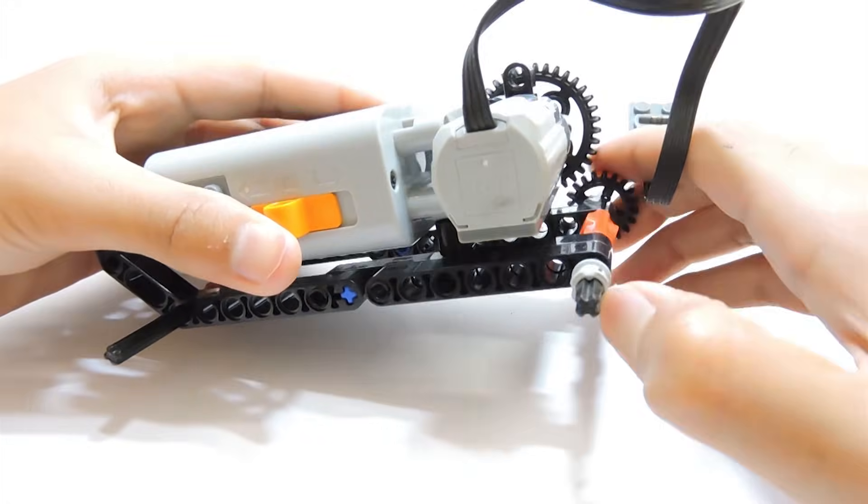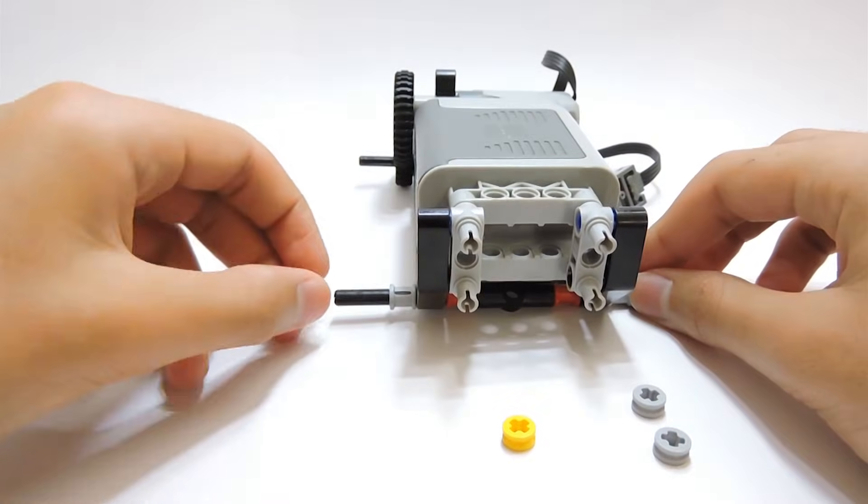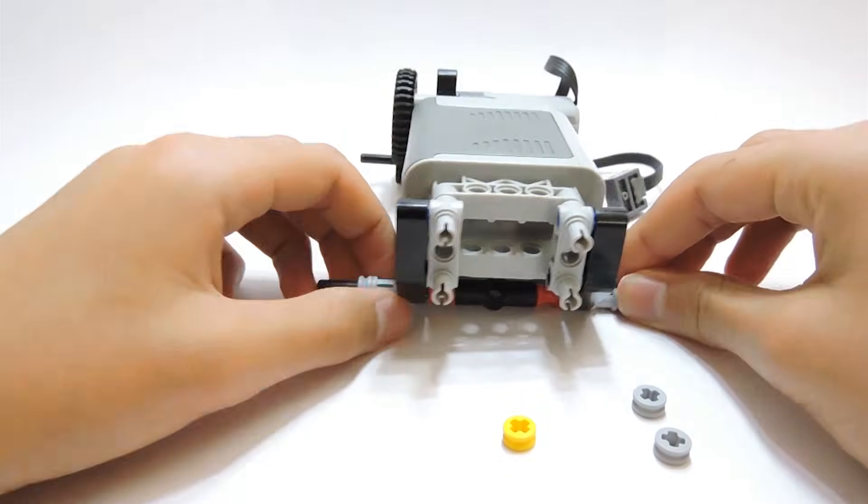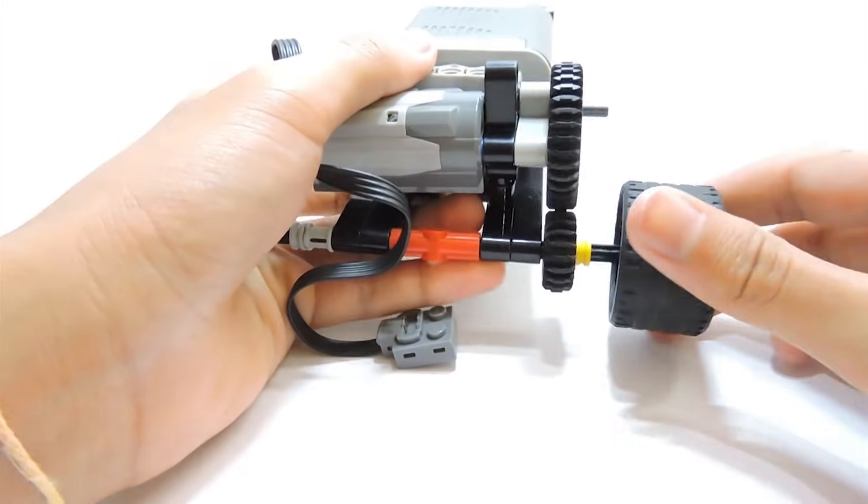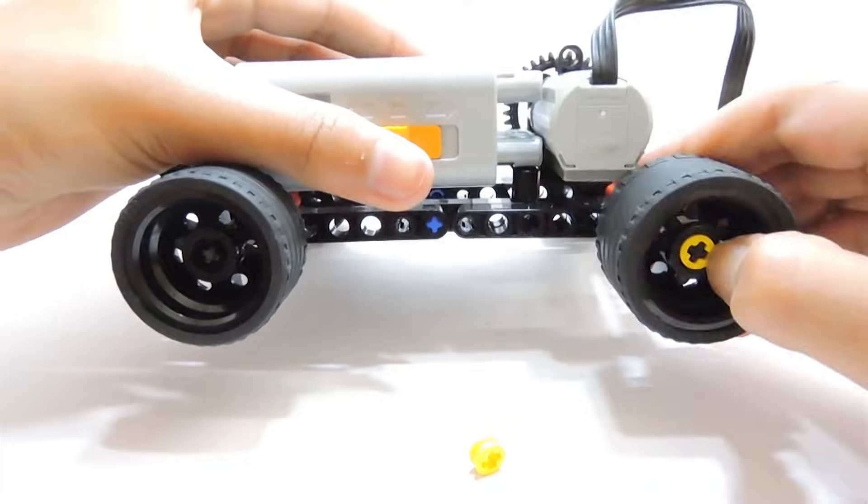Now, attach a bush to each axle except the one with the gear. Then, attach a half bush to all the axles. Once this is done, attach the wheels to all the four axles and secure them using half bushings.